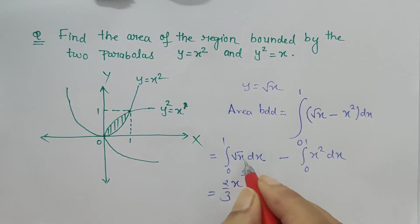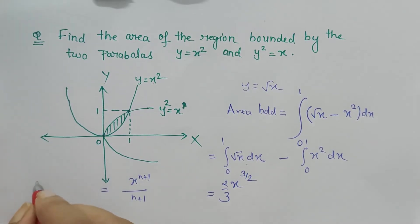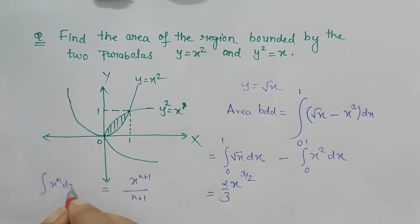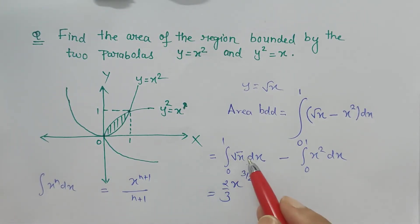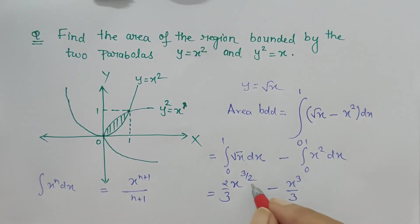We know integral of x^n dx is x^(n+1)/(n+1). We have applied this formula here and the same is applied here, so x³/3 with lower limit and upper limit.